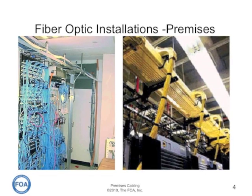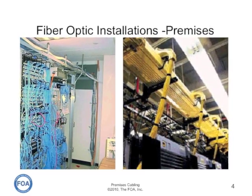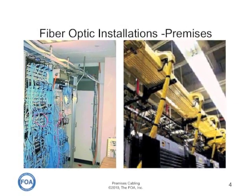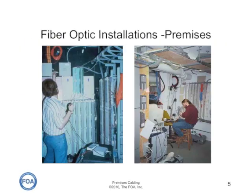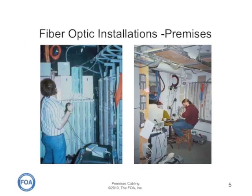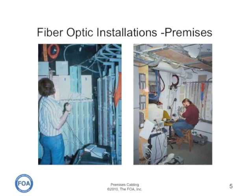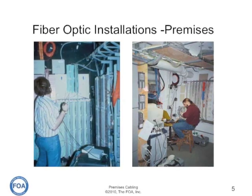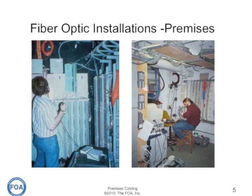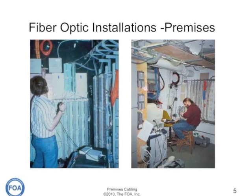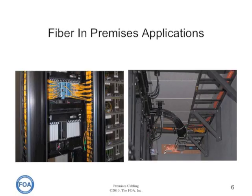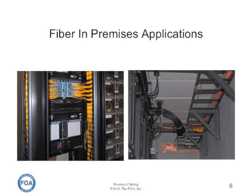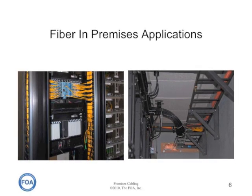Fiber optics is widely used in premises applications, whether it's in telecom closets, as shown on the left, or in central offices, shown on the right. Rather than large crews of workers and lots of big, heavy equipment, premises fiber optic cabling is generally installed by one or two workers, often working in crowded telecom closets. But what we want to see is cabling installed in a neat and workmanlike manner, like in these two large enterprise applications.